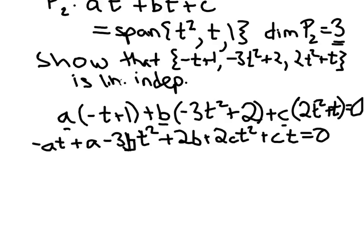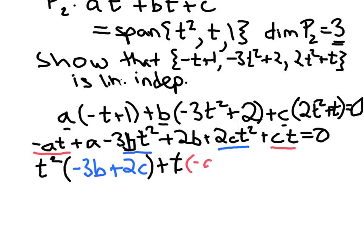And now I'm going to collect the powers of t, so collect my coefficients. So I have t squared times - I have negative 3b t squared and 2ct squared, so negative 3b plus 2c. Now I'm going to collect the t terms. So I have t times negative at here and ct here, so t times negative a plus c.